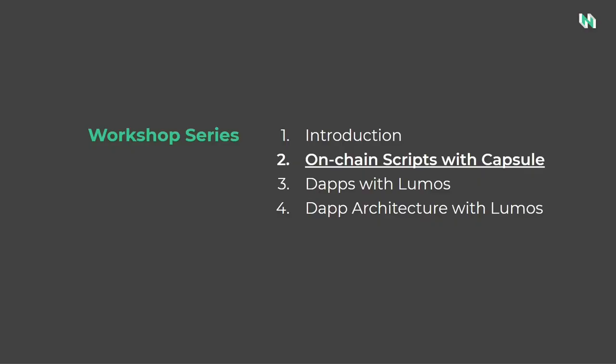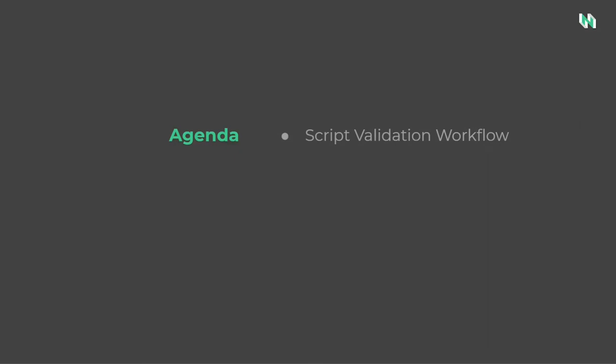This workshop is divided into four parts, and today we'll be covering part 2: Capsule Framework, a tool created specifically for writing on-chain smart contracts in Rust. Today's presentation contains three parts. First I'll introduce the script validation workflow. Next, I'll introduce the Capsule Framework for writing smart contracts in Rust. And finally, I'll walk through a demo application.